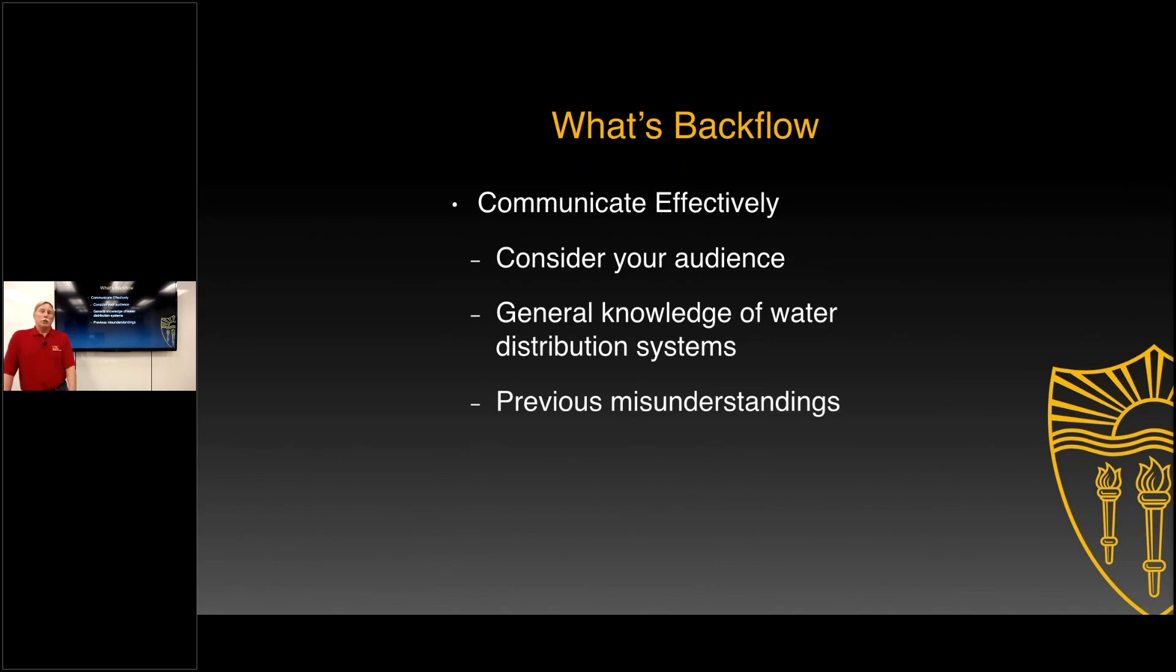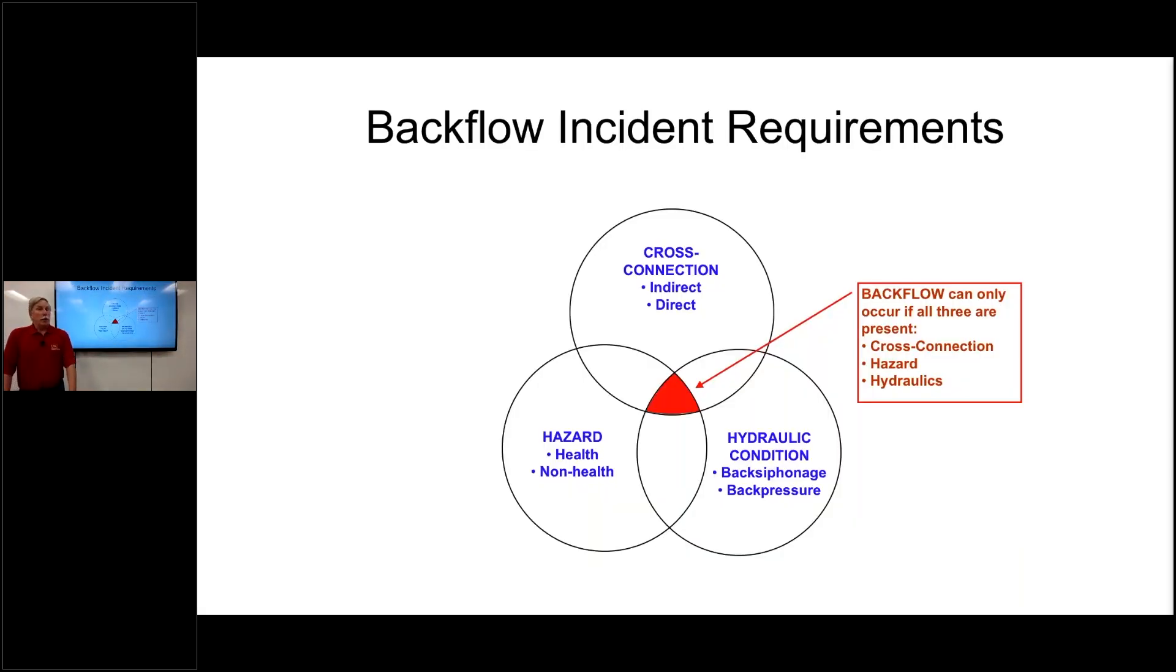So we were encouraged in preparation for this meeting to really make sure we try to make it as graphic as possible so people could understand. Probably one of the first things as we were putting this presentation together was trying to get people to understand that it takes a number of issues happening simultaneously for a backflow incident to occur. Many people were under the impression that we just have the cross connection, the garden hose hanging in a bucket of chemicals or a piece of equipment that's connected to the distribution system. Just that interconnection or the cross connection wasn't enough.